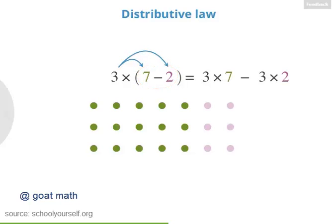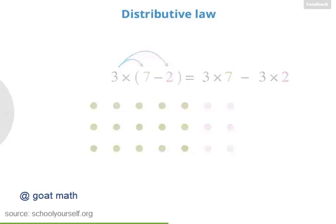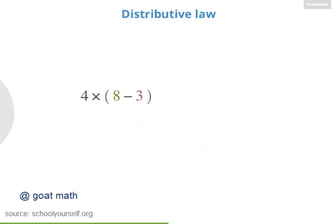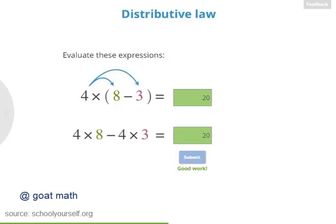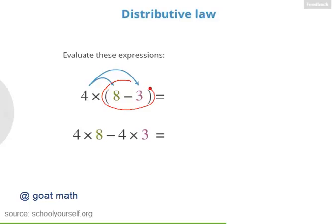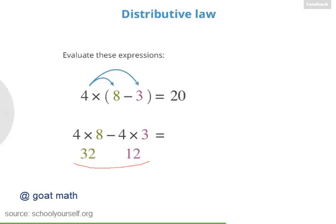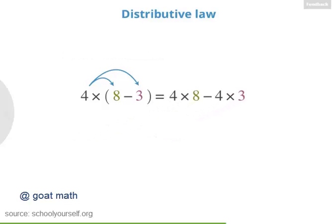When you're taking the difference inside parentheses and then multiplying by a number, you can distribute that number into the difference. Here's another example: 4 times (8 minus 3). Distributing, we get 4 times 8 minus 4 times 3. Evaluate these two expressions — you'll get the same result. 8 minus 3 is 5, times 4 is 20. And 4 times 8 is 32, 4 times 3 is 12, and 32 minus 12 equals 20. So the distributive law works on subtraction as well as addition.